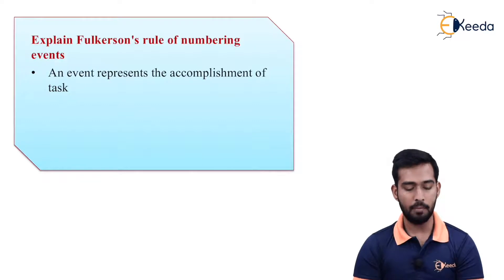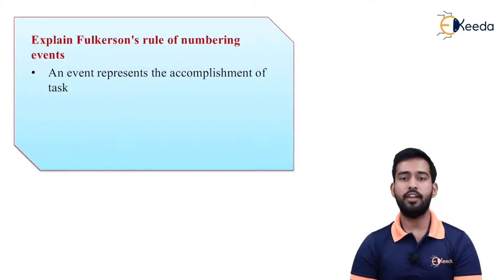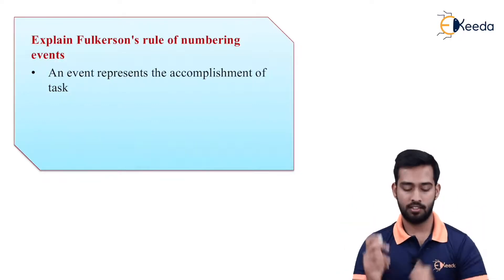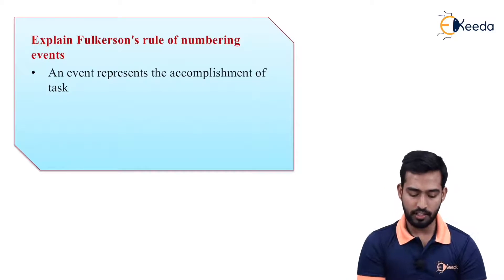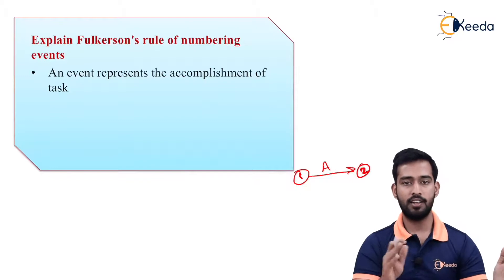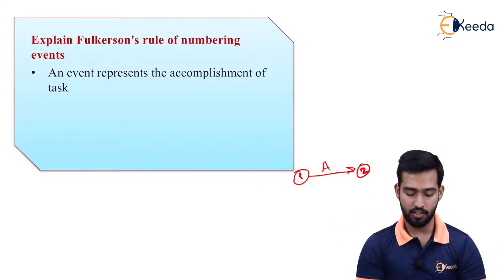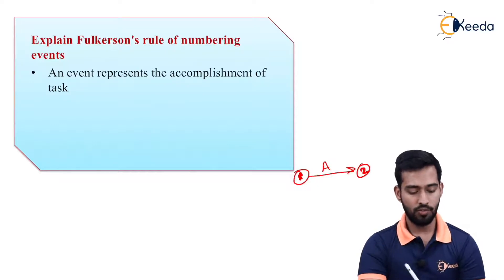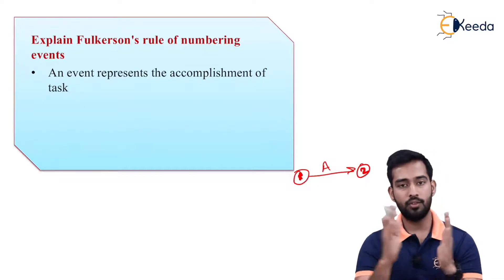An event represents the accomplishment of tasks. For example, if the task is constructing, we have activity A which is known as constructing. And we have a tail event and head event. This is your tail event, number one, and number two is your end event. So we have to give the number to your events one, two, three, four accordingly.